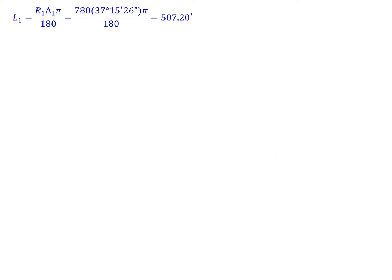Starting with the lengths of curves: L1 is radius of curve 1 times delta 1 times pi divided by 180, so 780 times 37 degrees 15 minutes 26 seconds times pi divided by 180 gives us a length of 507.2 feet for L1.